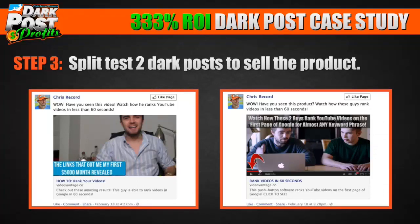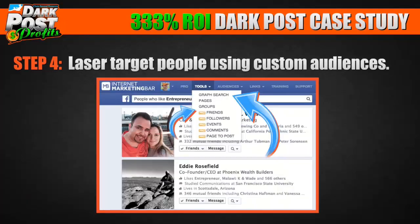Step number three: I split test at least two dark posts to sell the product — sometimes seven, eight, nine, or ten. In this example, you can see two that I used. You'll notice the thumbnails are slightly different, as are the titles, the description, and the links. That's what split testing does — it tells you what performs the best.